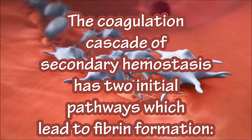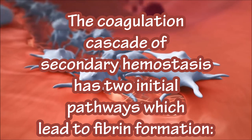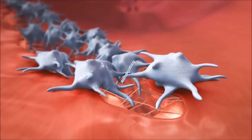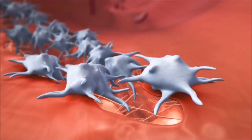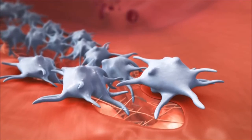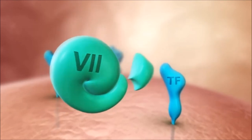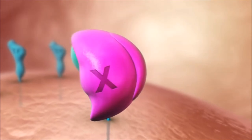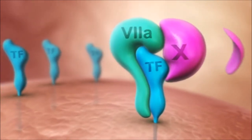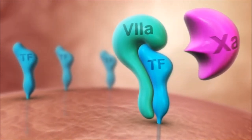The coagulation cascade of secondary hemostasis has two initial pathways which lead to fibrin formation: the intrinsic and extrinsic pathways. The extrinsic pathway is activated by binding with tissue factors, which form a complex with factor 7, finally leading to activation of factor 10. Factor 10a is the point at which the extrinsic and intrinsic pathways of the coagulation cascade meet.